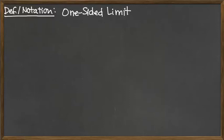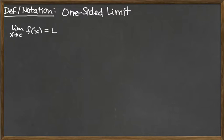In introducing a limit, I mentioned approaching from both sides. So we need a way to formalize what we mean, with some notation to go along with it, for a one-sided limit. We have the limit as x approaches C of f(x) equals L for the full limit, but if we put a little minus sign as a superscript to the C, that is now a one-sided limit — the left-hand limit.